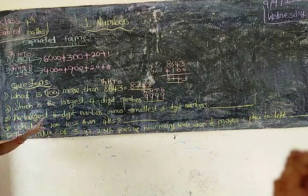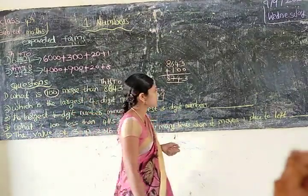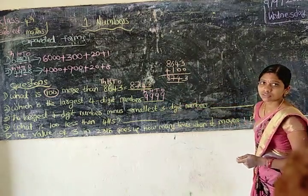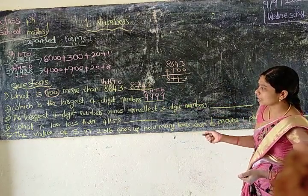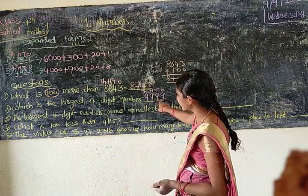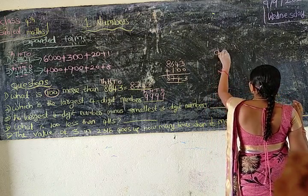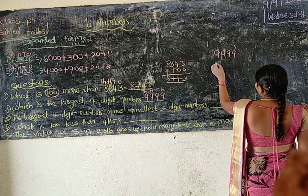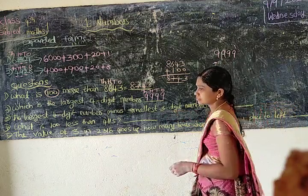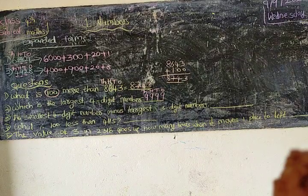Next: the largest four-digit number minus the smallest three-digit number. The largest four-digit number is nine thousand, nine hundred and ninety-nine, minus the smallest three-digit number, which is one hundred. The answer is nine thousand, eight hundred and ninety-nine.